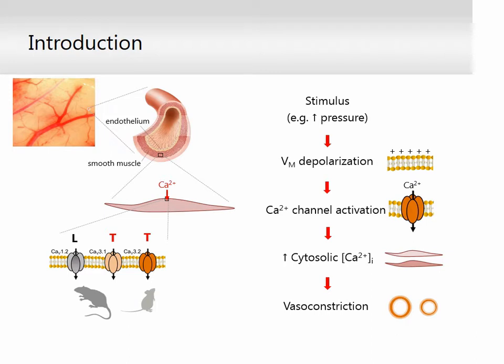This emerging evidence has relied primarily on experimental work conducted on rodent arterial smooth muscle. Little is known about the expression and function of specific CAV subtypes in human arteries.